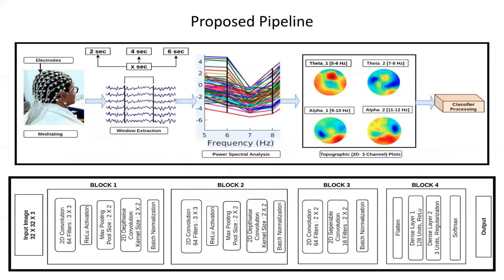We propose our model here. We divide the classification pipeline into processing units. The first is to create spectral density 2D plots from neural responses, and the second is to define the classification model. EEG time series signals are extracted into windows of 2, 4, and 6 seconds.